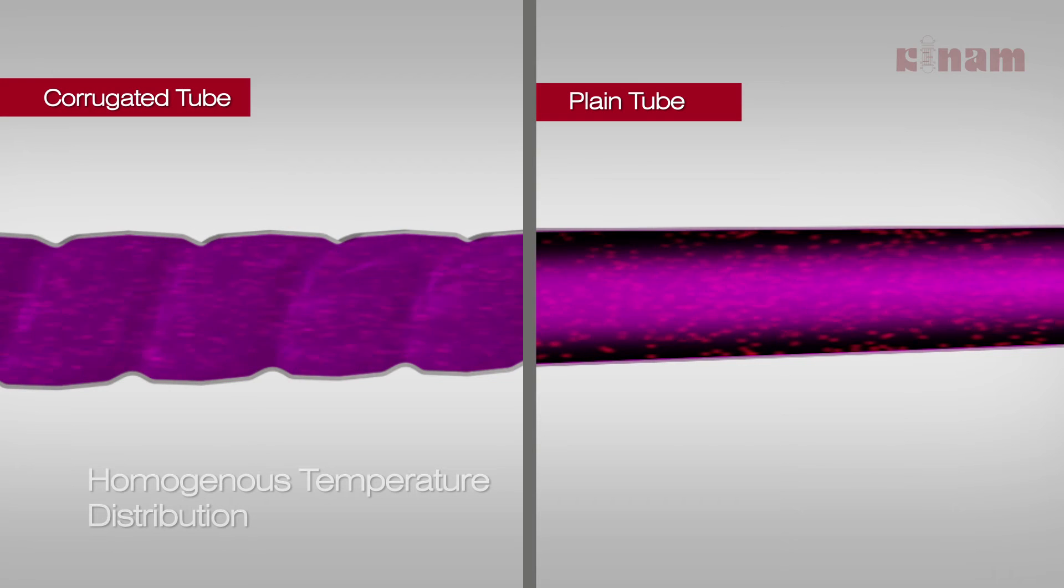Corrugated tubes also offer homogenous temperature distribution in the tube.